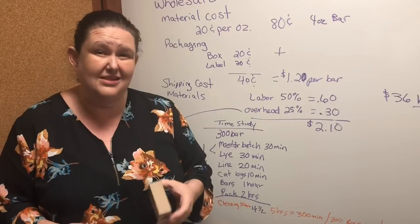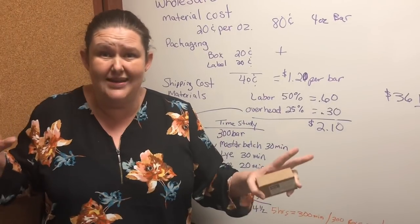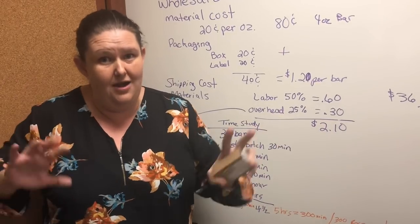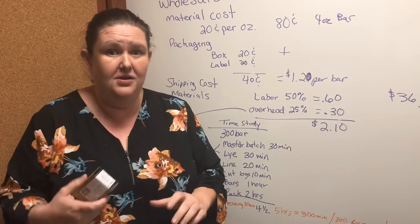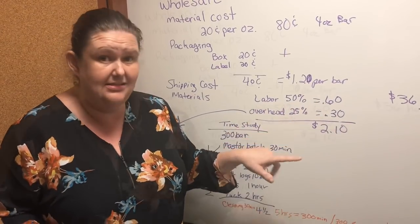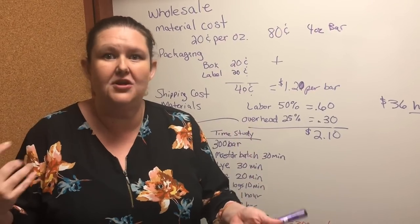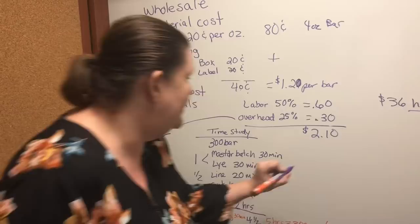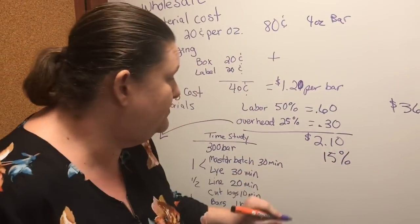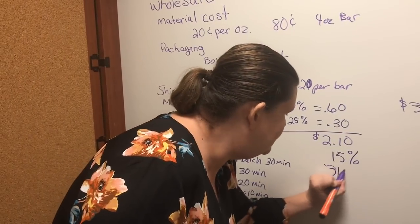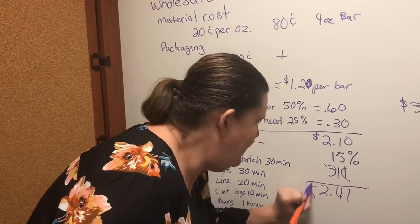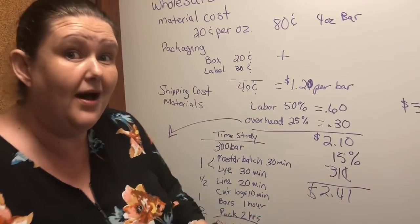So my bar of soap comes to $2.10 — that's the lowest I can sell it. Big box stores want right around there for this bar, so I know I'm able to sell to a big box store. Now, if you're going to have a sales rep, the minimum they'll want is 15% commission — put that right into your cost before you even get started. That's another $0.31, so now you're at $2.41 as your bare minimum.